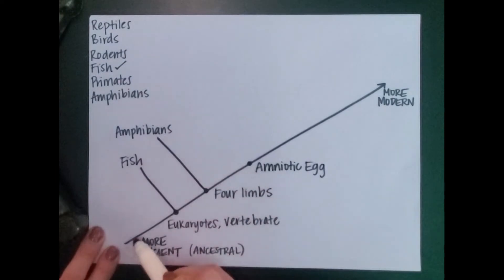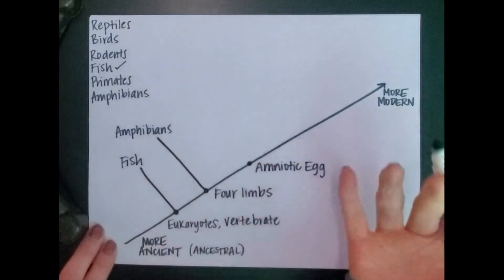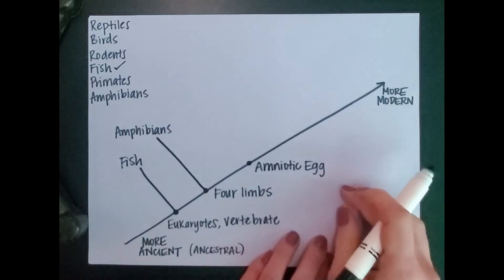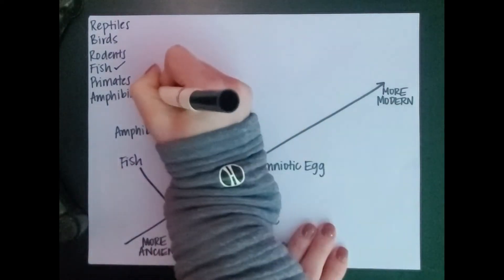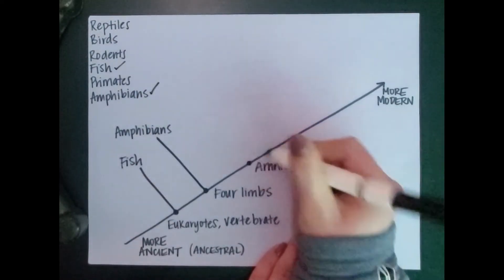Now if I look at this, I say fish are eukaryotes and they have vertebrae. That's true. They do not have four limbs. Amphibians have four limbs. They're eukaryotes and they have vertebrae, but they don't have an amniotic egg. So we're going to continue creating this cladogram here, and then I'll show you how to deconstruct it as well. Amniotic egg, they all have that.